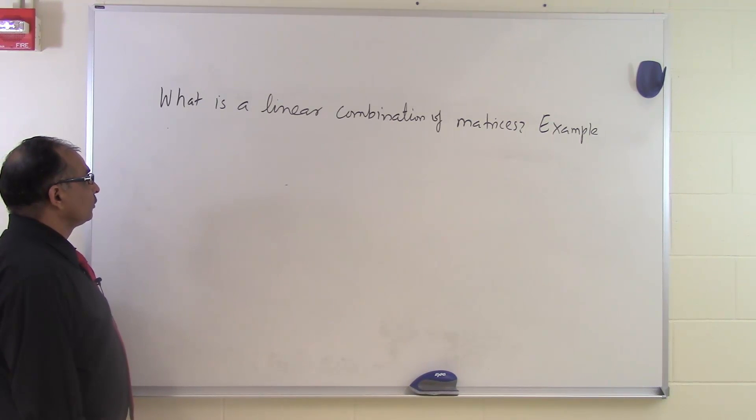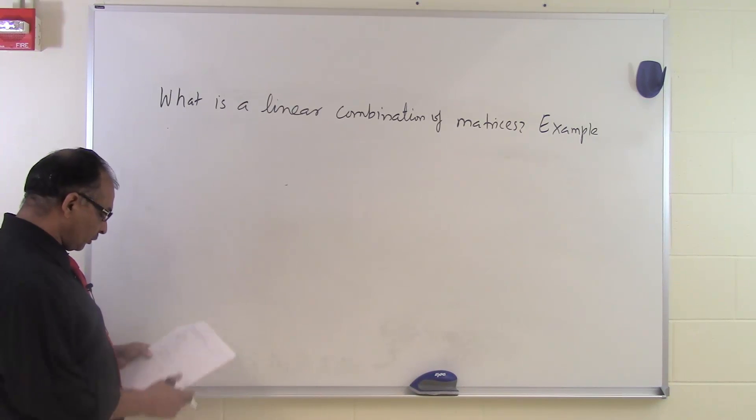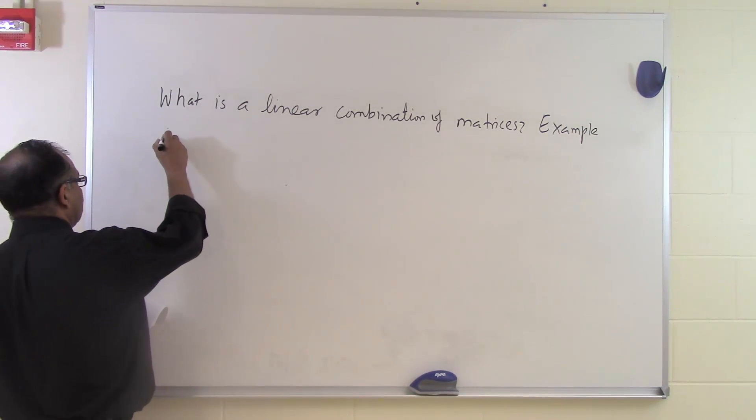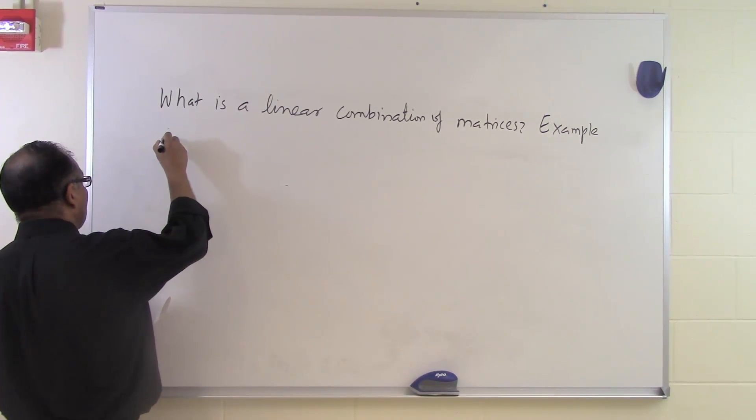So in this segment we're going to talk about an example of finding a linear combination of matrices. Let's suppose the problem statement is as follows.